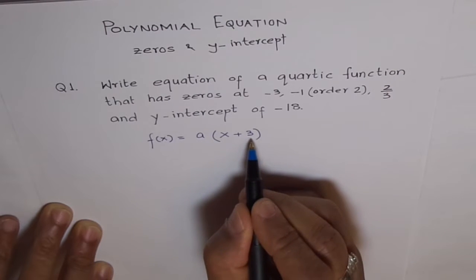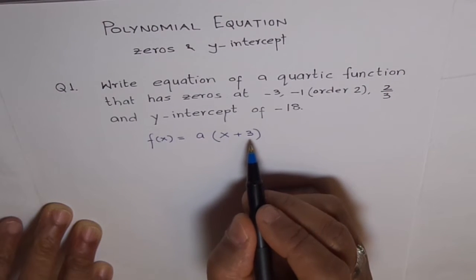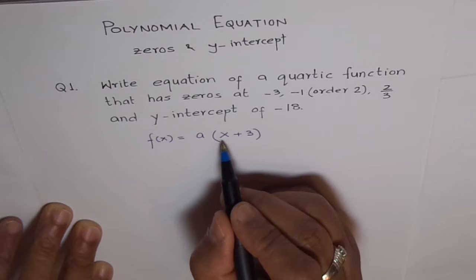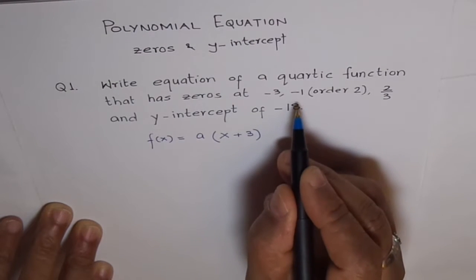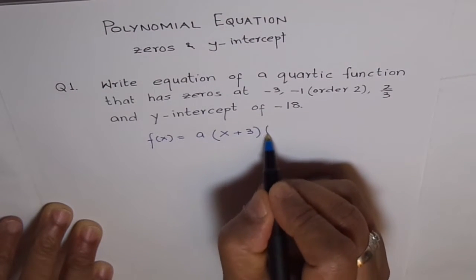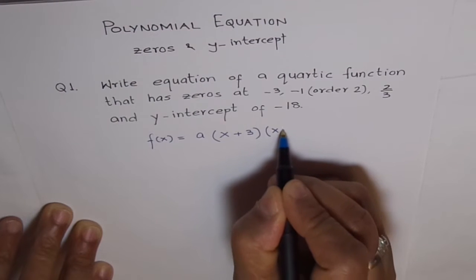So, if I write x plus 3, I have this zero at x equals minus 3, correct? This zero is at minus 1. Therefore, the factor should be x plus 1.